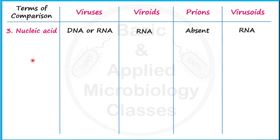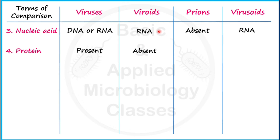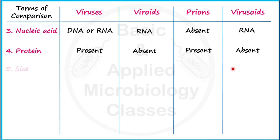Regarding protein: viruses have protein, which is why we call them nucleoprotein particles. Viroids have no protein because they are only made up of RNA. Prions are entirely protein — a helpful mnemonic is that 'P' stands for both prions and protein. Virusoids lack proteins.